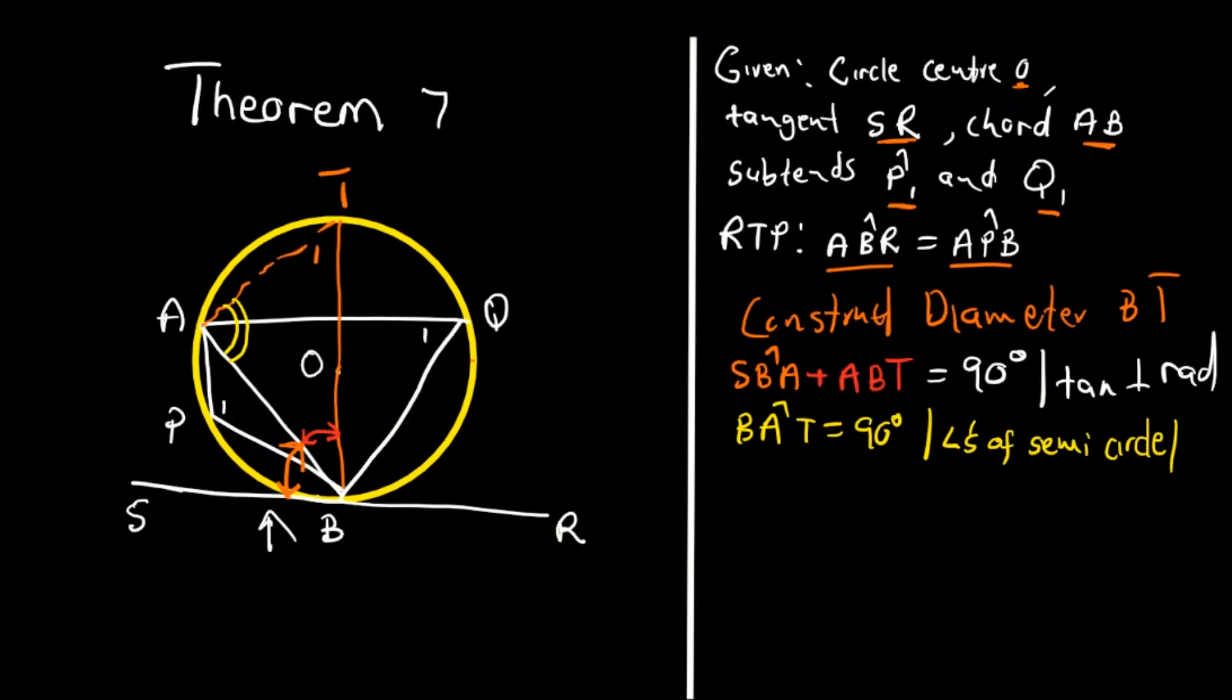Now we also know that since this is 90 degrees, that means that the addition of T1 and this angle here should also give 90 degrees. So the addition of angle ABT plus angle T1 must give 90 degrees.